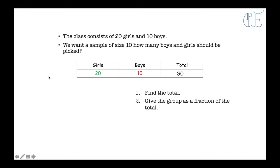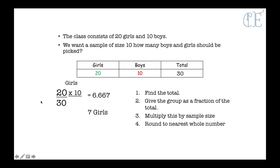We then give the group as a fraction of the total. So we have girls 20 out of 30, because it's 20 girls out of 30 in total. Here it's saying I want a sample size of 10, not 10% just 10. So now I have to times that by the sample size which is times by 10, giving us an answer of 6.667. We can round that to the nearest whole number which is 7 girls.